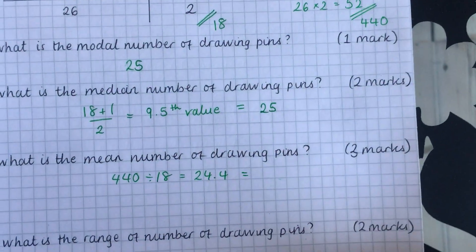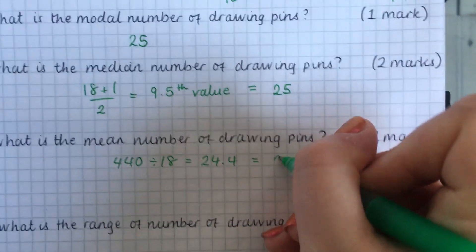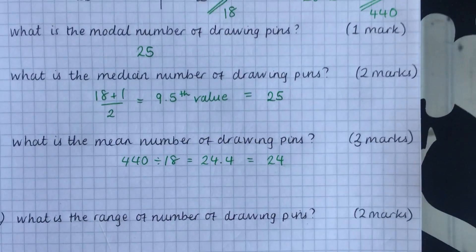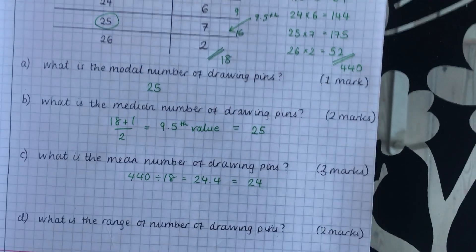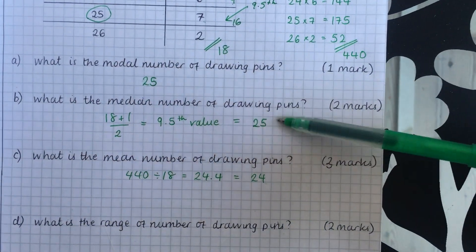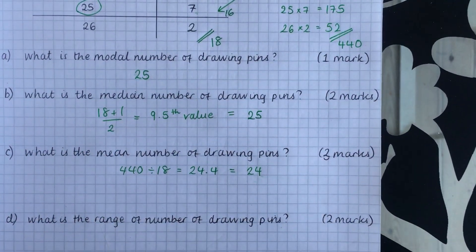And again, we round that because you can't get 0.4 of a drawing pin. We're going to round it down this time to 24. So again, looking at our averages, just making sure that they are all quite similar. Yes, they are. That makes sense.